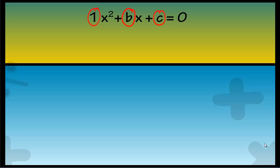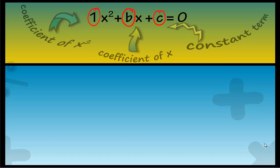Did you get what we have done here? Let's generalize our method now. Let the general equation be x square plus bx plus c, where the coefficient of x square is 1, coefficient of x is b, and constant term is c. We take the constant term to the other side: x square plus bx equals minus c.